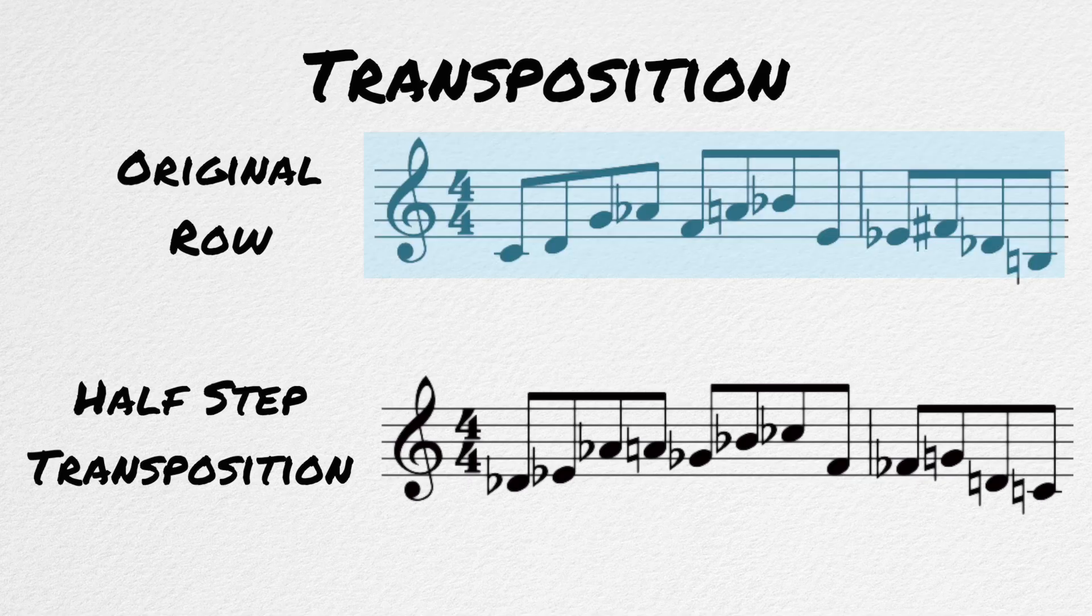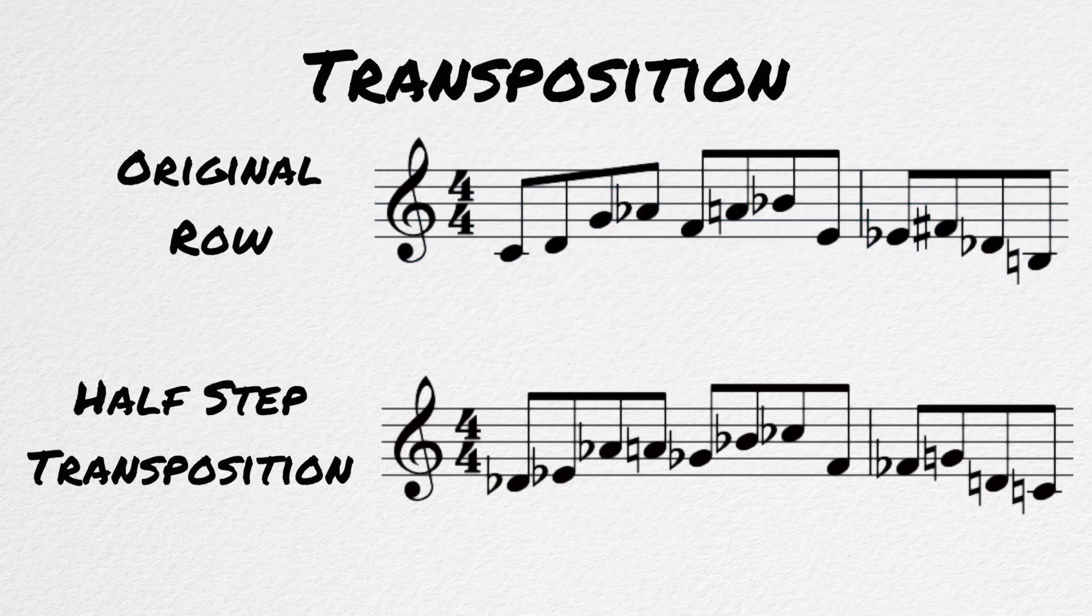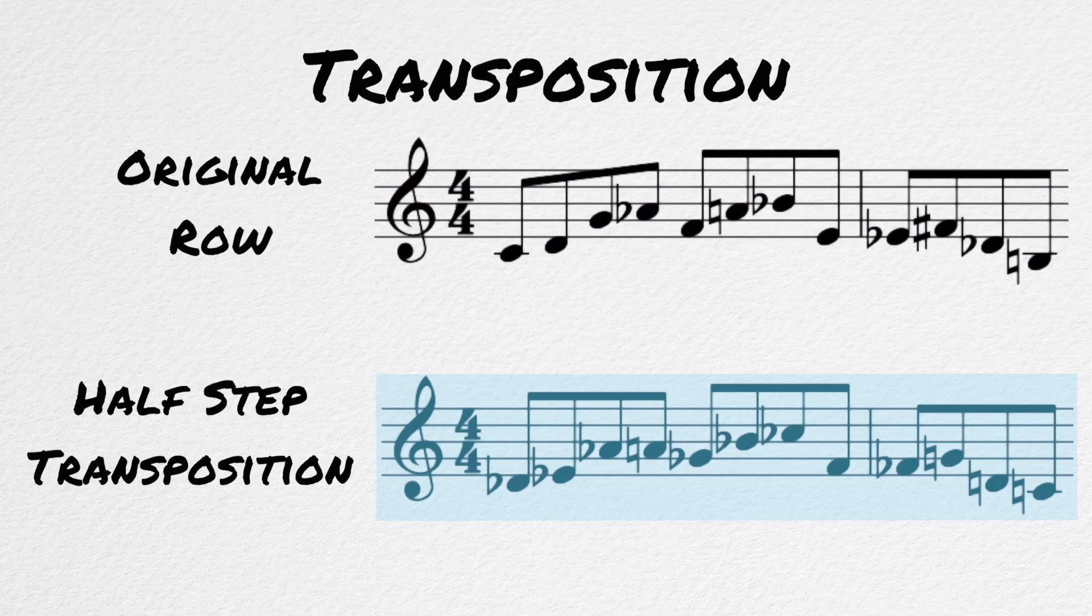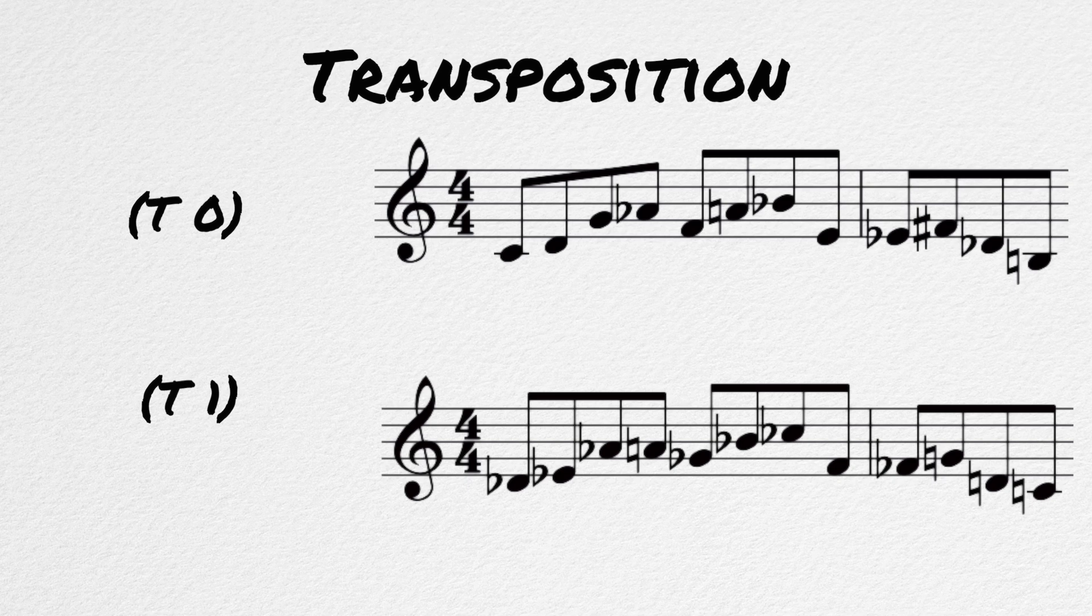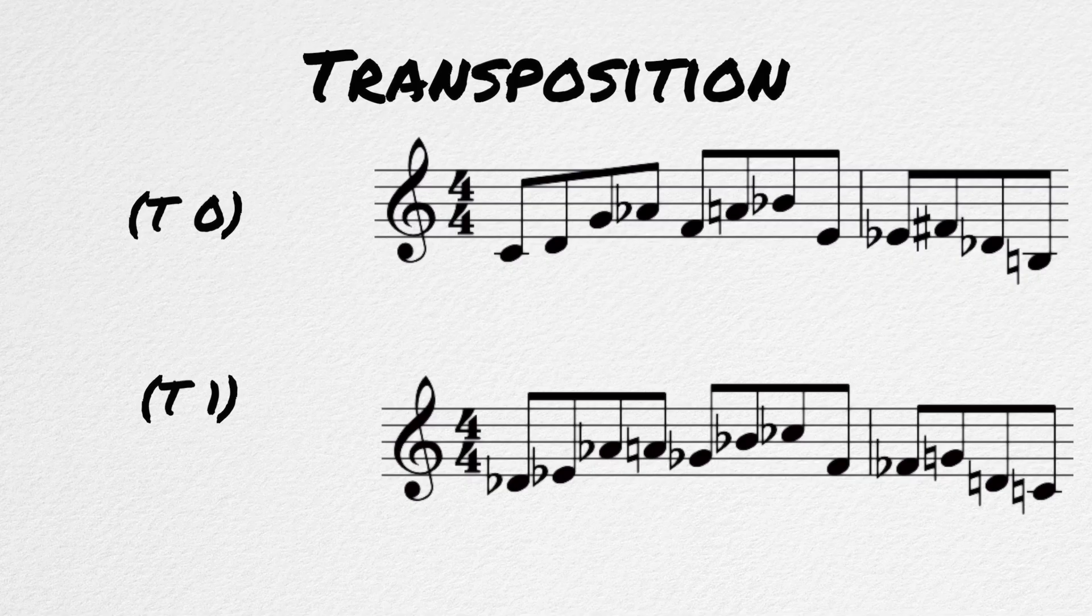For example, our row, if transposed up by one half step, would become... We can also call this version of our row T1, or transposition 1, with the original row being named T0. We can transpose the row by any interval that we'd like.